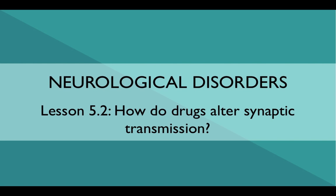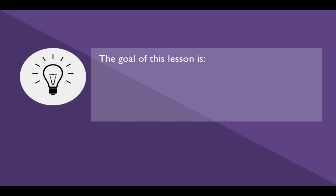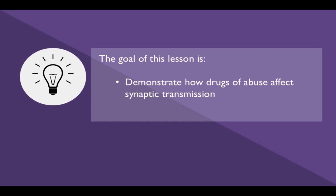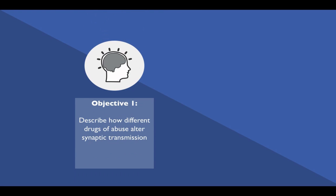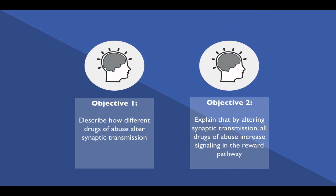Neurological Disorders Lesson 5.2: How do drugs alter synaptic transmission? The goal of this lesson is to demonstrate how drugs of abuse affect synaptic transmission. At the end of this lesson, students should be able to describe how different drugs of abuse alter synaptic transmission and explain that by altering synaptic transmission, all drugs of abuse increase signaling in the reward pathway.